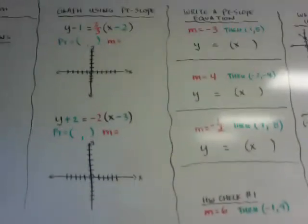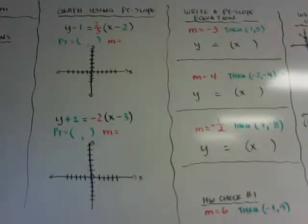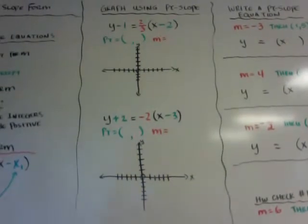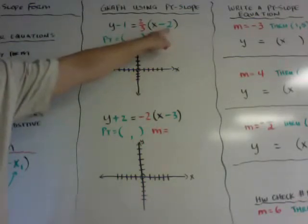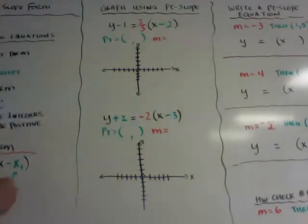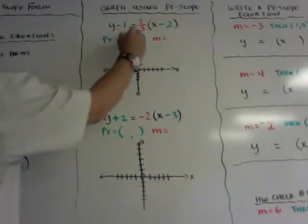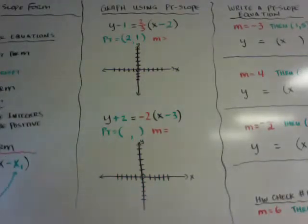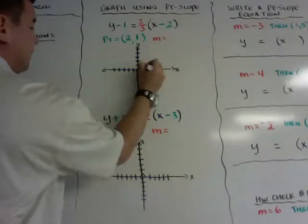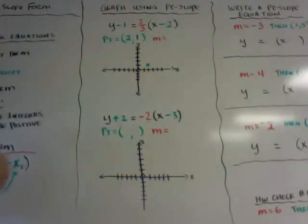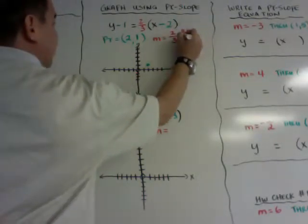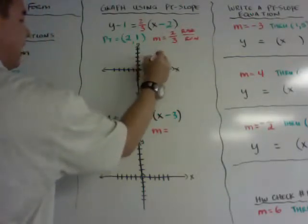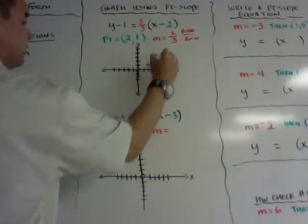For graphing, if they give you the equation in point-slope form, the first thing you want to do is find the point. If the equation has x minus 2, that means x1 is positive 2. And if it has y minus 1, then y1 is positive 1, so your point is 2 comma 1. Plot that point. Then your slope is 2 thirds — rise over run — so I rise 2 and run 3 to get the next point.